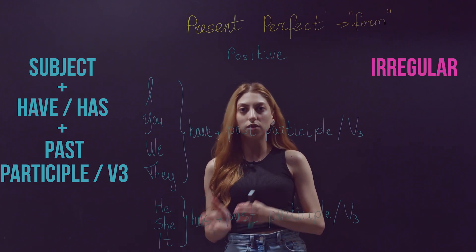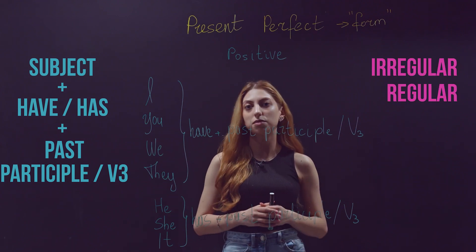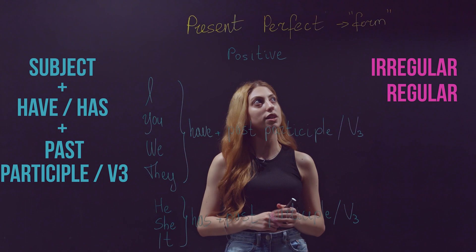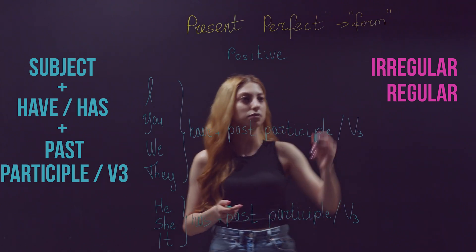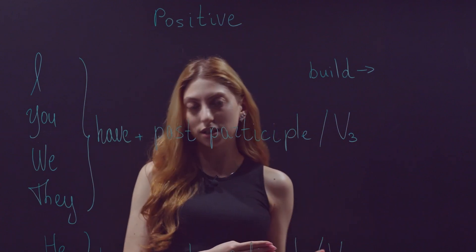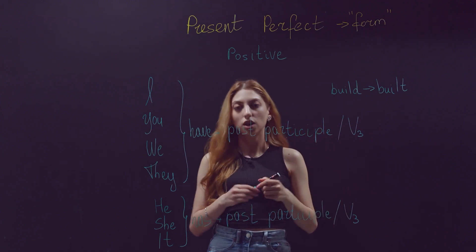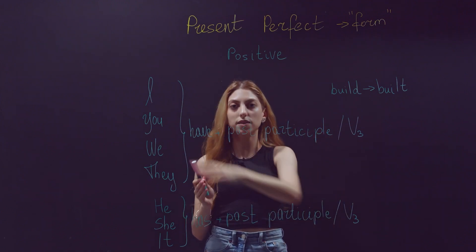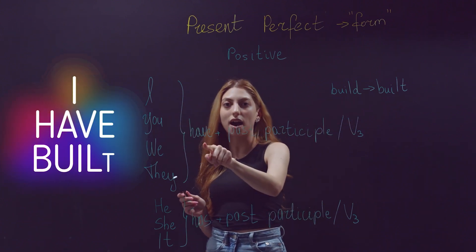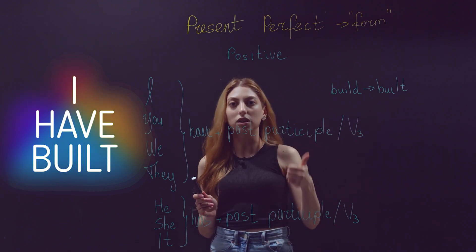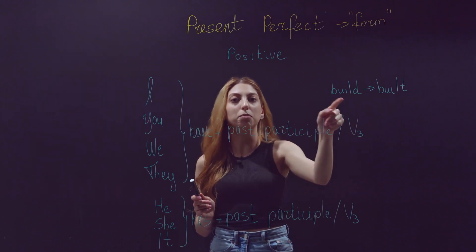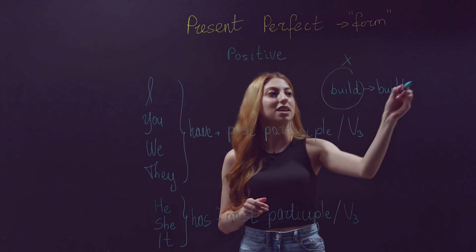If our verb is irregular, for example 'build', the third form of build is 'built'. So if I want to form the present perfect tense using the verb 'build', I need to say, for example, 'I have built.' Not 'I have build' — that is the wrong version. 'I have built' is the right version.